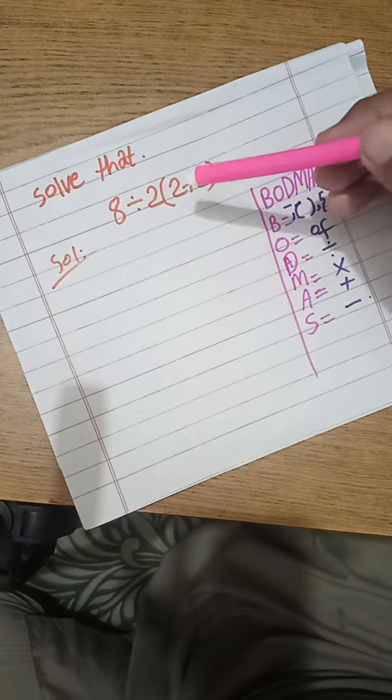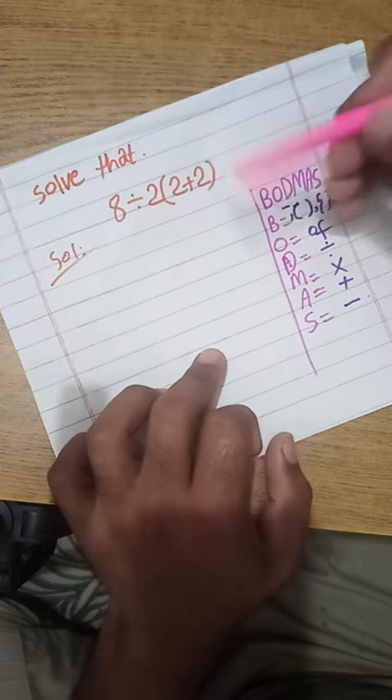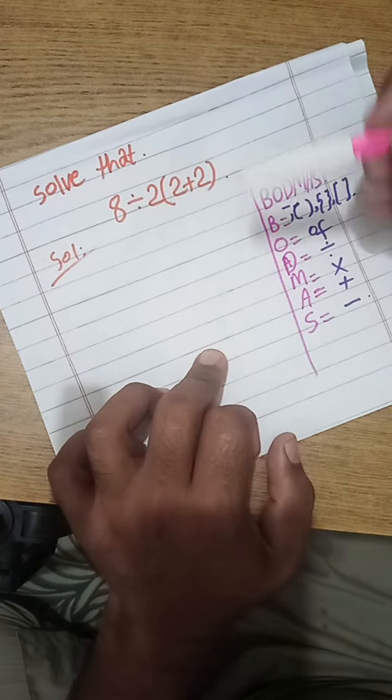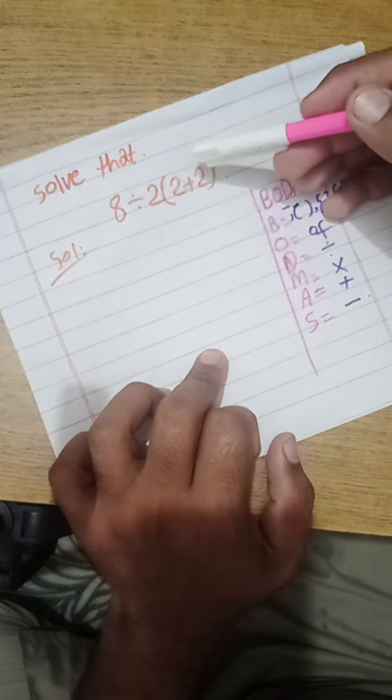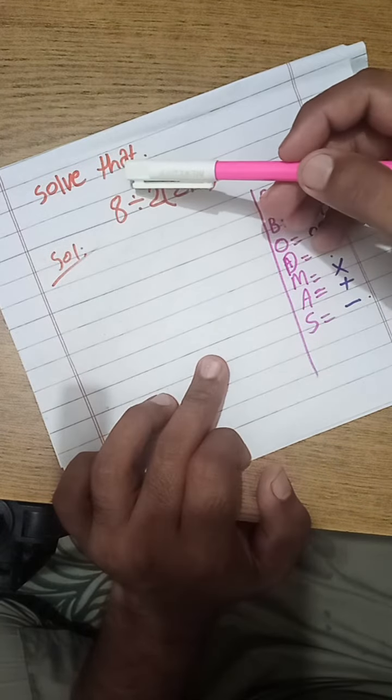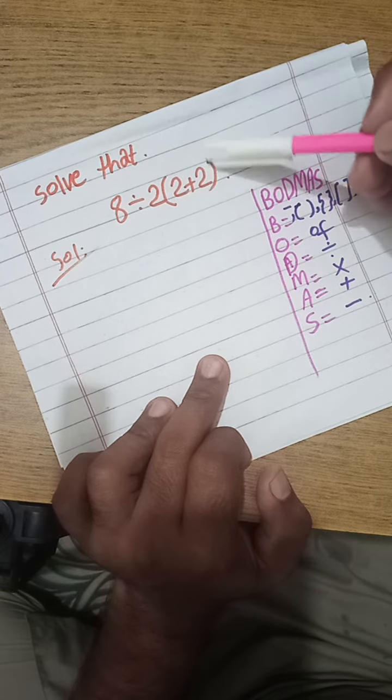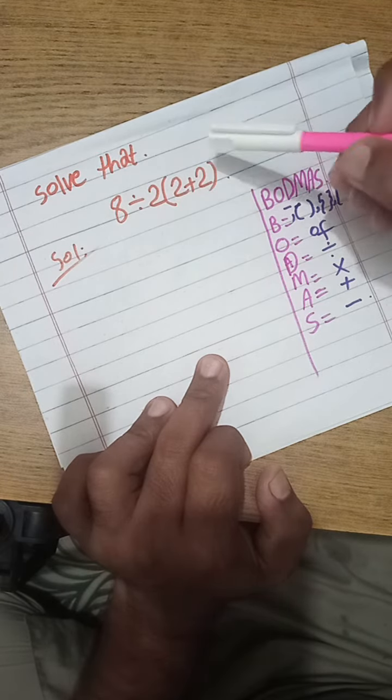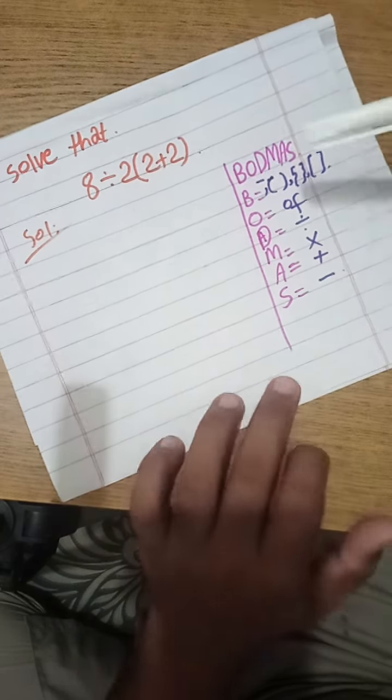Bismillahirrahmanirrahim. Another very important topic of mathematics. Solve this simple problem. It looks simple, but one to two steps in this problem is very important to discuss. First of all, we have a problem: 8 divided 2 into curve bracket 2 plus 2 into curve bracket close. So we solve this problem by BODMAS rule.